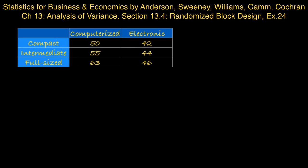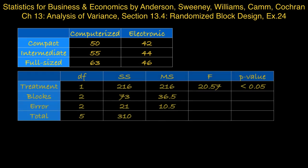The data obtained are as follows. Use alpha equal 0.05 to test for any significant differences. So to answer this question, we're going to set up the following ANOVA table. We first want to fill in the degrees of freedom column. The total degrees of freedom is equal to the total sample size, which is 6, minus 1, which comes to 5.